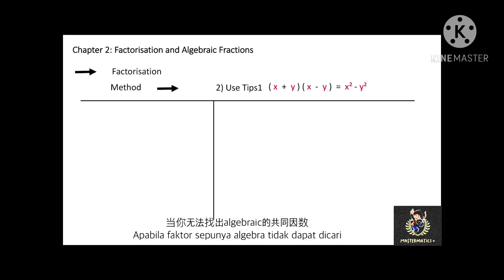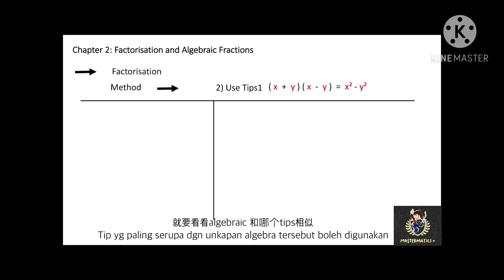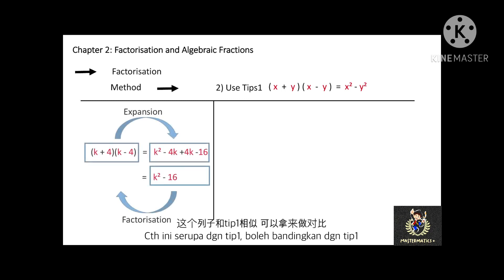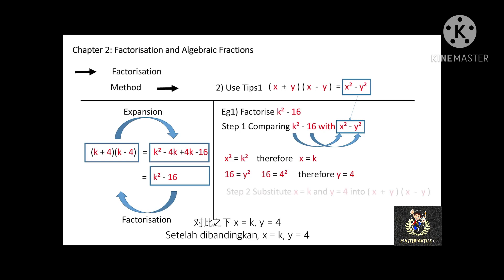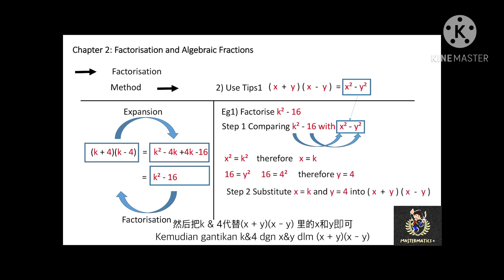For factorization we use Tips 1, 2, 3, or 4 if we are unable to find the highest common factor. For example, use Tips 1 — (x plus y)(x minus y) equals x squared minus y squared — to factorize k squared minus 16. Comparing with x squared minus y squared, we find x equals k, and since 16 equals 4 squared, y equals 4. Substituting into (x plus y)(x minus y) gives (k plus 4)(k minus 4).